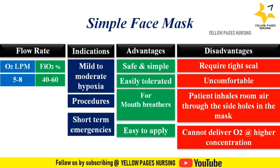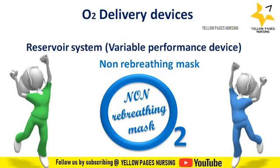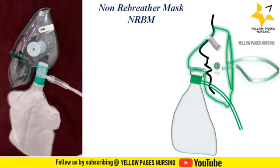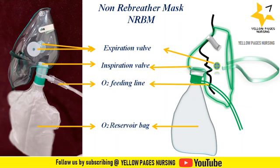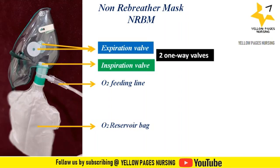The next variable performance device is the non-rebreather mask (NRBM). It is a simple face mask with an oxygen reservoir and a valve. Parts include an expiration valve, an inspiration valve, an oxygen feeding line, and an oxygen reservoir bag. The NRBM is a low flow device with high FiO2; it uses a reservoir bag to deliver a high concentration of oxygen and has two one-way valves — an inspiration valve and an expiration valve.